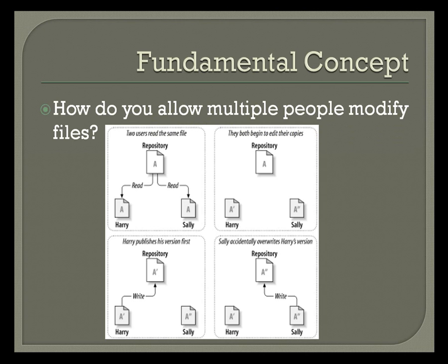So what is version control? What problems do we encounter whenever we want to develop software amongst many developers? We know that you have to share files amongst many people. This example is from the SVN book found on the Tigris website. Harry and Sally both get the most current version of a file and start modifying it. Harry then writes back to the repository, and all of Harry's changes are lost.